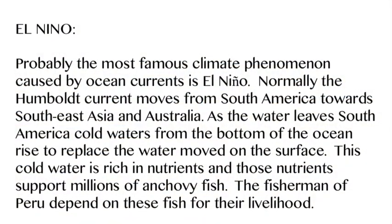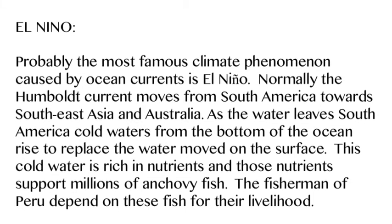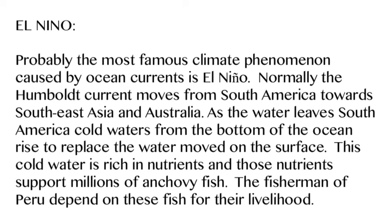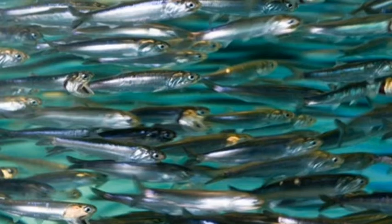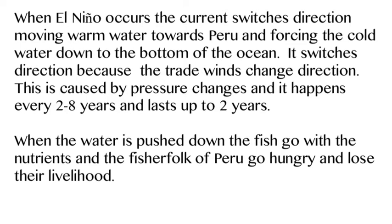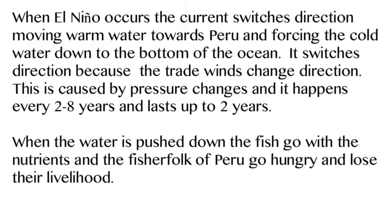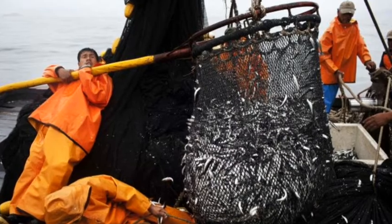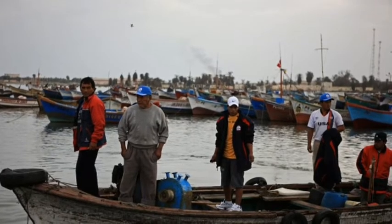One of the most famous climate phenomena is El Niño, and it is caused by ocean currents. Normally, the Humboldt Current moves from South America toward Australia, and when it does, cold water rushes up to replace it — that cold water brings nutrients that feed anchovies. But when El Niño occurs, the current switches directions, so warm water and air move from Australia toward South America, pushing nutrients and anchovies down, devastating the anchovy harvest.